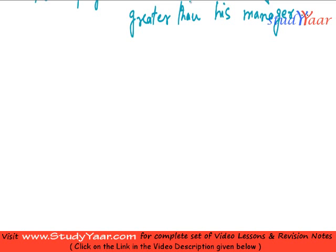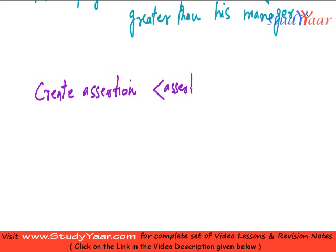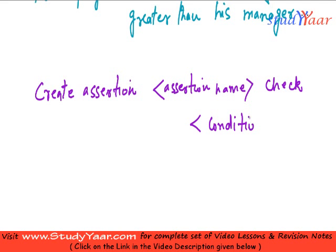An assertion in SQL is created with the following syntax: CREATE ASSERTION, followed by an assertion name. Note this is not case sensitive — you can write in all lowercase, all caps, or mixed case. Then there is a keyword CHECK, followed by your condition. That is the syntax for creating an assertion.